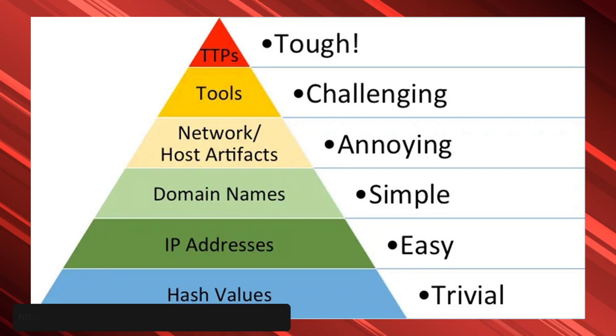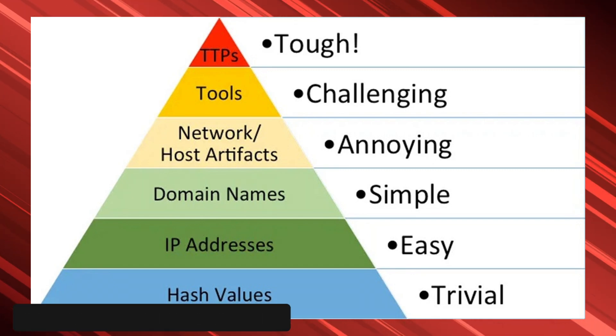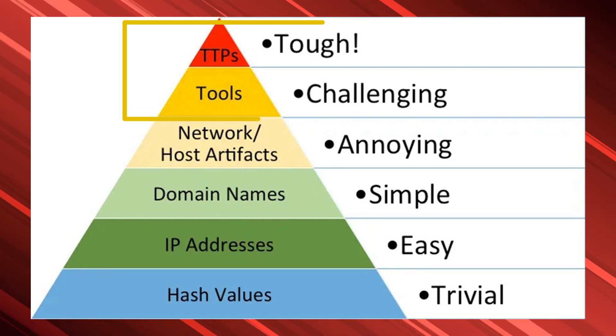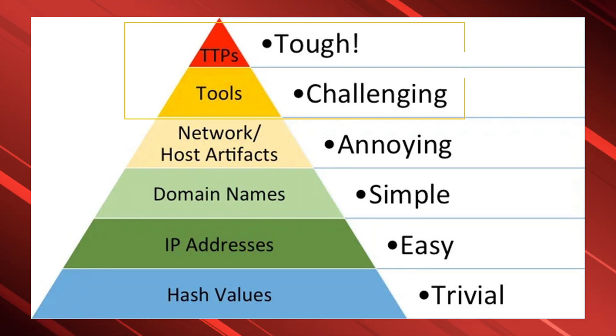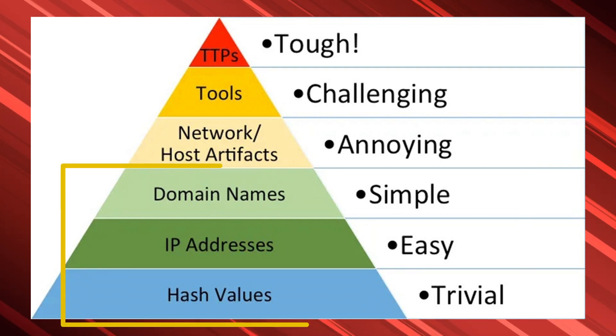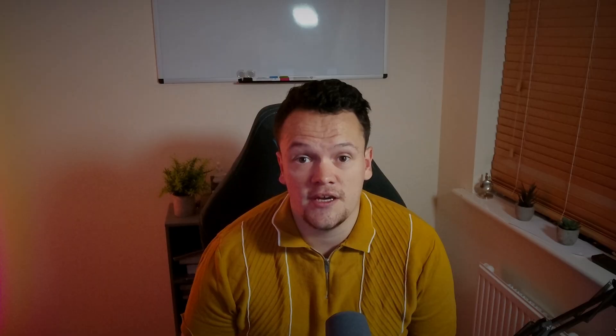There can be some confusion between operational and tactical intelligence. It is best to think of tactical intelligence as intelligence further up the pyramid of pain — indicators that are more difficult for an attacker to change. This includes specific vulnerabilities, exploit code, and TTPs, rather than atomic indicators like IP addresses, domains, and hashes, which are relatively easy to change to evade detection. Building mitigation for indicators derived from tactical intelligence takes longer, but they will be more robust.